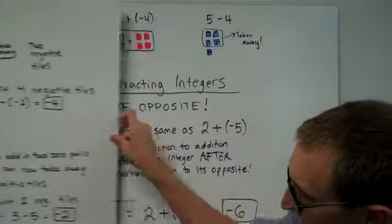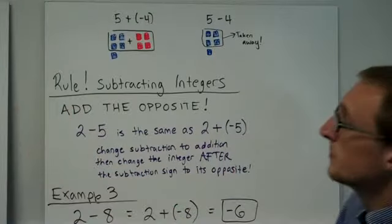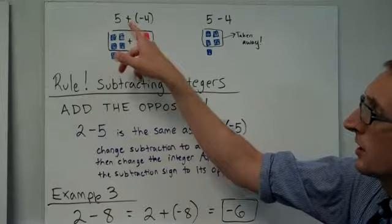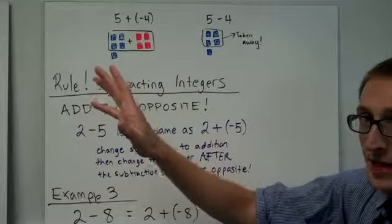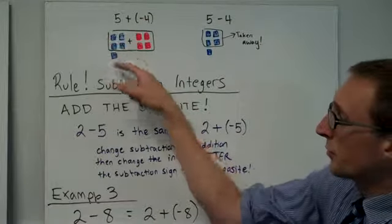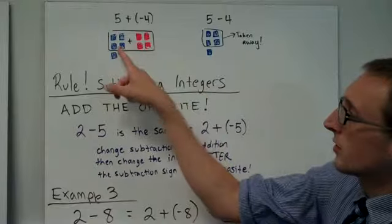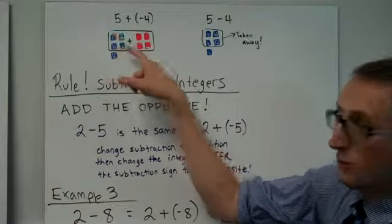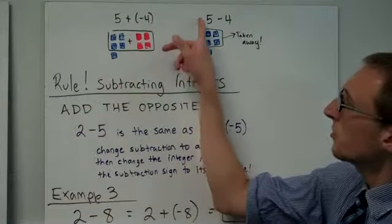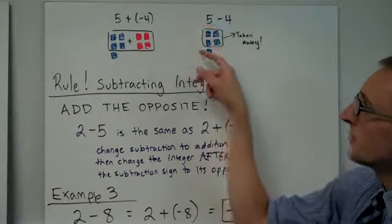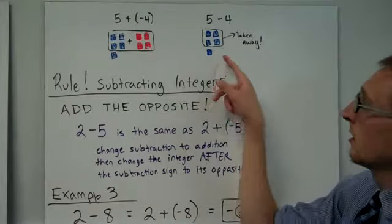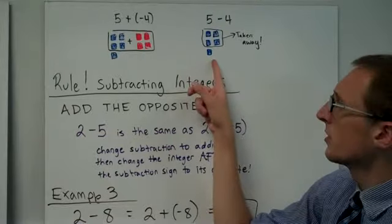Let's take a look at a different example here. Let's say we have 5 plus negative 4. That means we start with 5 tiles, and now we're adding this time, going back to adding integers, we're adding negative 4 tiles. So here are my 5 blue ones. Here are my 4 negative ones. When I put these together, it forms 0 pairs, and then you're left with 1 blue tile. Now look at 5 minus 4. That means we have 5 blue tiles, and it wants us to take away 4 blue tiles, because 4 is positive. When we do that, we end up with, hey, we end up with a 1 as well.